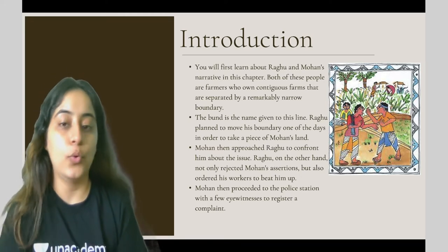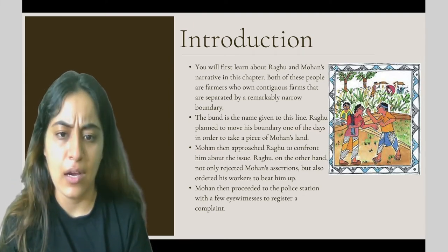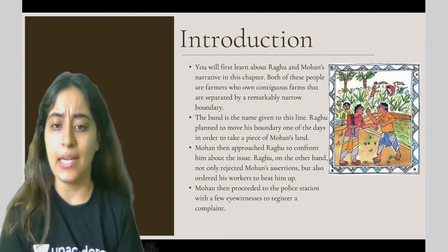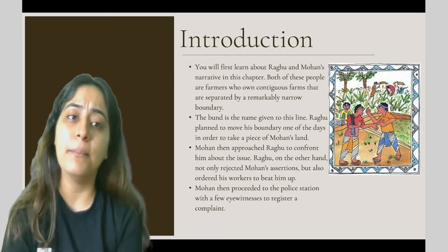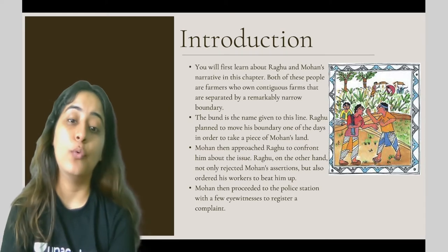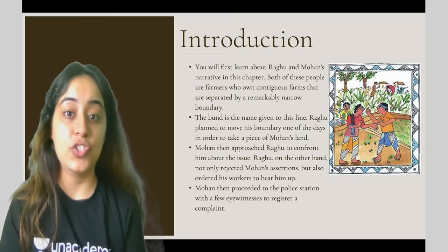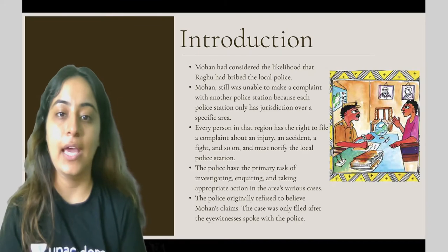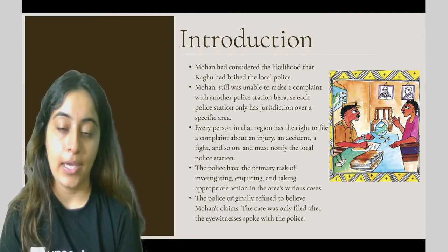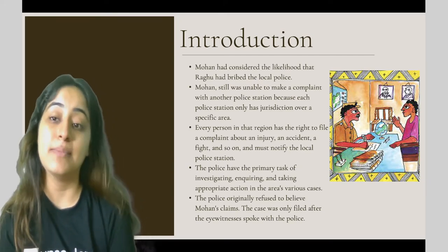Ragu moved his boundary to take a piece of Mohan's land. Mohan approached Ragu and said this is wrong, but Ragu immediately rejected it saying he had not done anything like that. Ragu then threatened Mohan's workers. So Mohan went to the police station and took some eyewitnesses to make a complaint. However, Mohan was initially unable to make a complaint at another police station because each police station only has jurisdiction over a specific area.